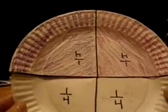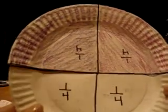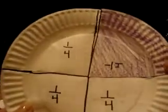We have two quarters that are shaded, which is equal to one half. One quarter is shaded, and three quarters are not.